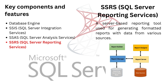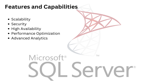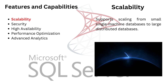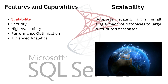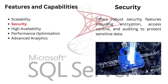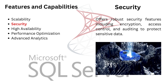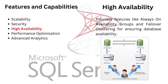SQL Server Reporting Services is a server-based reporting tool used for generating formatted reports with data from various sources. Features and capabilities include scalability, supporting scaling from small single-machine databases to large distributed databases. Security offers robust security features including encryption, access control, and auditing to protect sensitive data. High Availability provides features like Always-On Availability Groups and Failover Clustering for ensuring database availability.